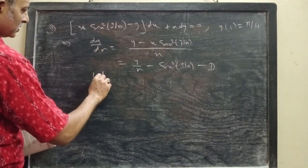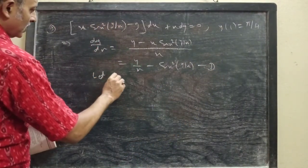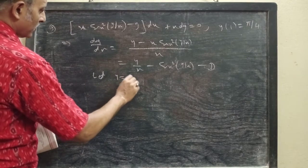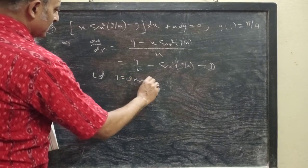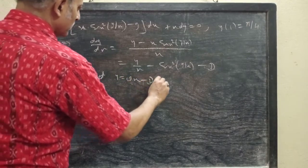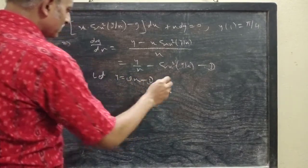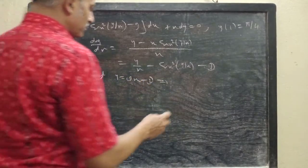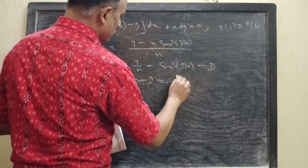Now first express dy/dx as y/x minus sin²(y/x). Let this be equation 1. Next, let y equal v·x — this is equation 2. Differentiating both sides of equation 2 with respect to x, we get dy/dx equals v plus x·(dv/dx). This is equation 3.